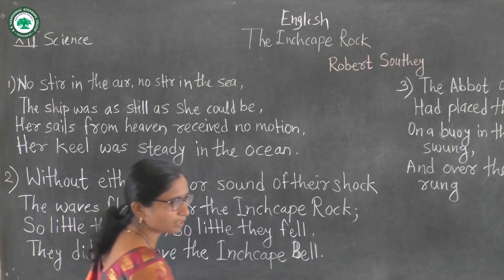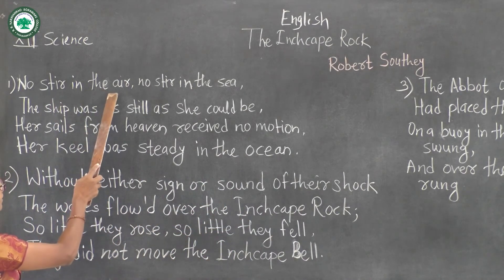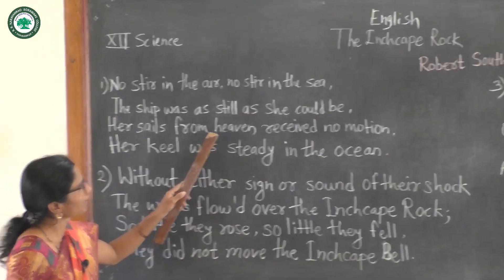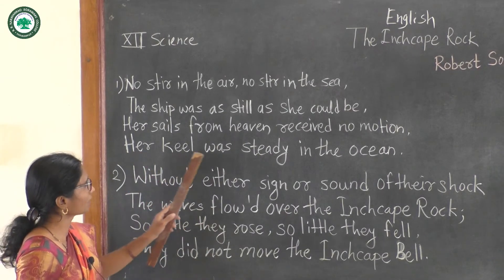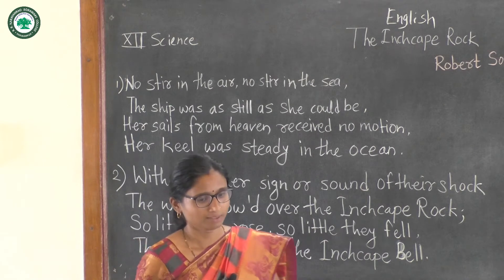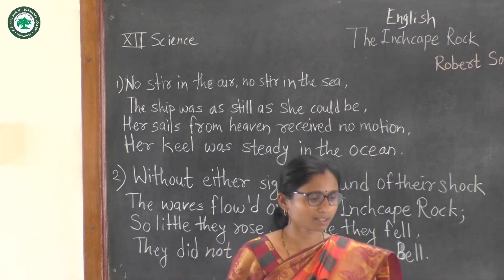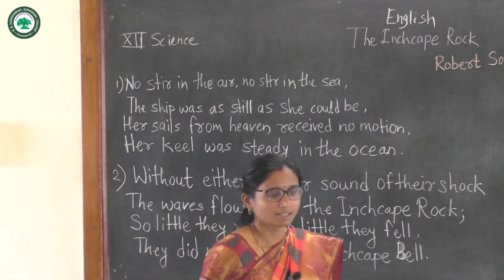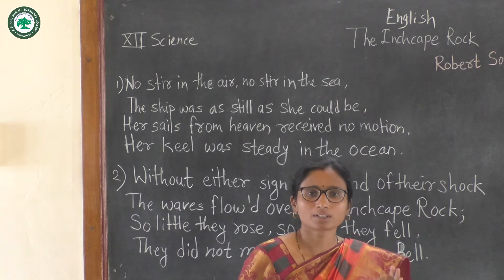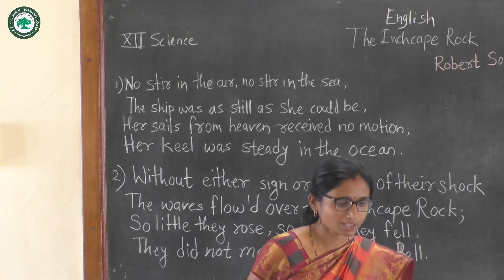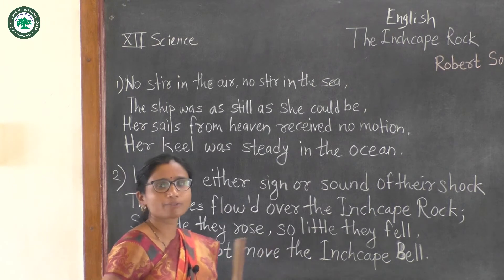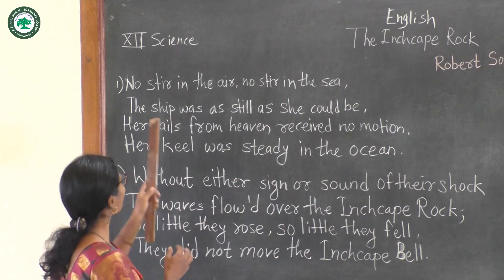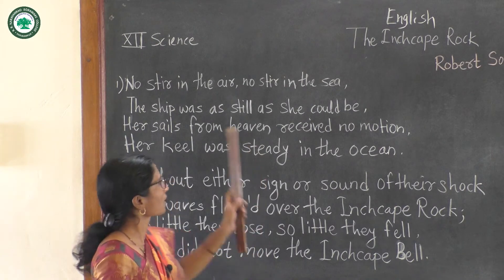See the first stanza: 'No stir in the air, no stir in the sea. The ship was as still as she could be. Her sails from heaven received no motion. Her keel was steady in the ocean.' In the first stanza, the poet uses repetition in the first line to emphasize the quiet and stillness. Stir means slight movement — there was no slight movement in the air or the sea, and the ship was also standing still with no motion.